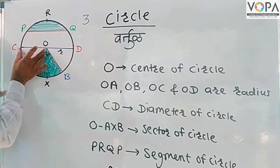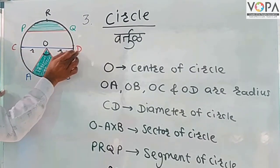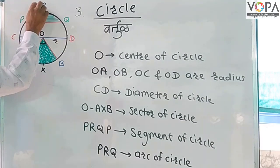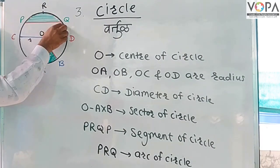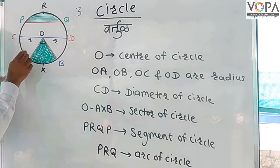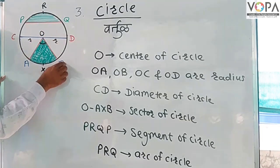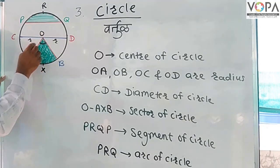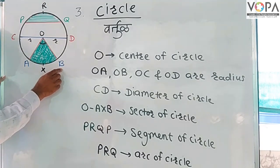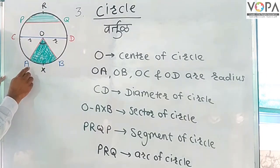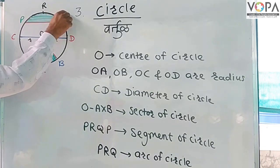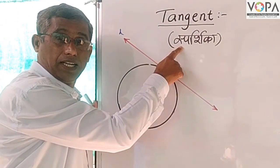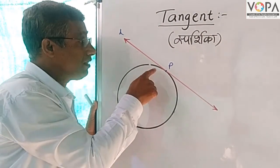CD is the diameter. The diameter is twice the radius. PRQ are segments of the circle. AOB is a central angle. The region bounded by two radii is a sector of the circle. XB, PRQ are arcs of the circle.